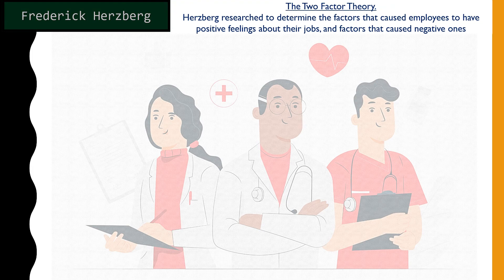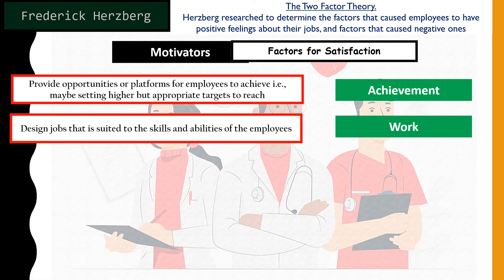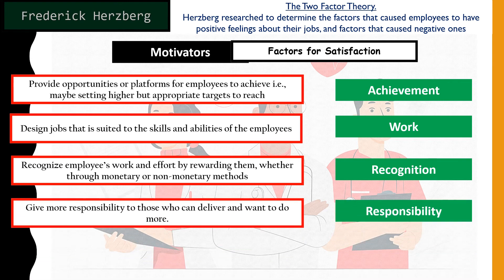Let's look at the answers. For achievement, companies should provide opportunities or platforms for employees to achieve more — perhaps by setting higher goals — which makes them positive about their job. For work design, jobs should be suited to the skills and abilities of employees so they can work better. For recognition, recognize employees' work and effort by rewarding them through monetary or non-monetary methods — even a certificate or gift voucher gives a sense of recognition.